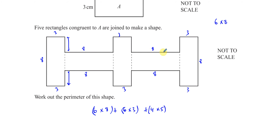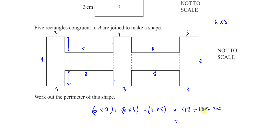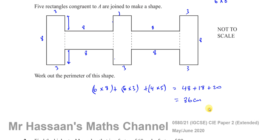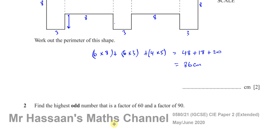So the perimeter is: 6 times 8 equals 48, plus 6 times 3 equals 18, plus 4 times 5 equals 20. That gives us 48 plus 18 plus 20. That's 66 plus 20, which equals 86 centimetres. The answer to question number 1 is 86 centimetres.